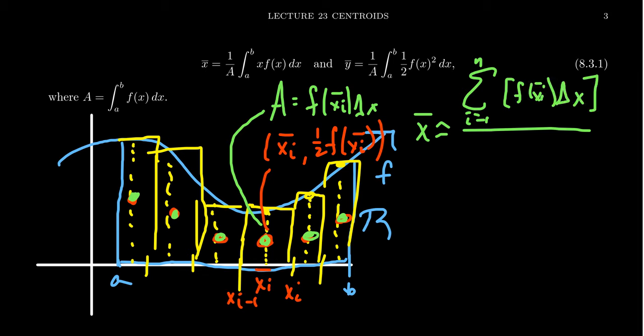Then we'll multiply this by its location, which is just xi bar. And then we're going to divide this by the sum of the masses, which is f of xi bar delta x.